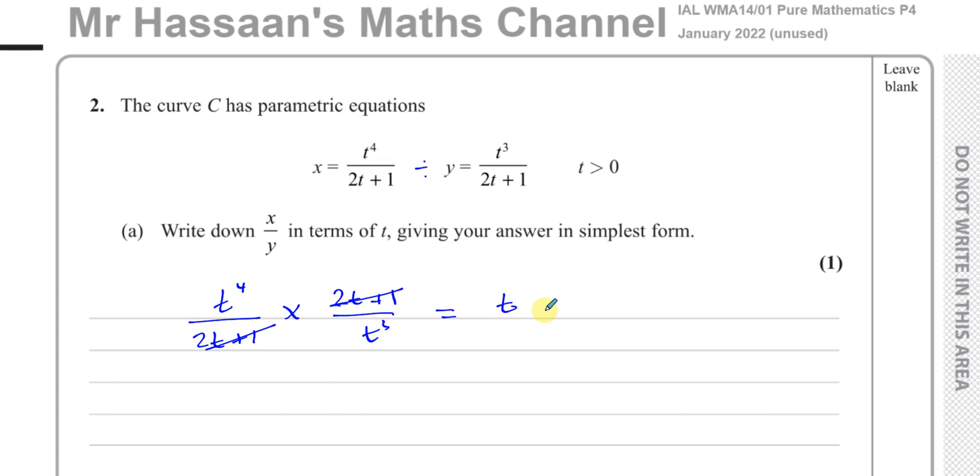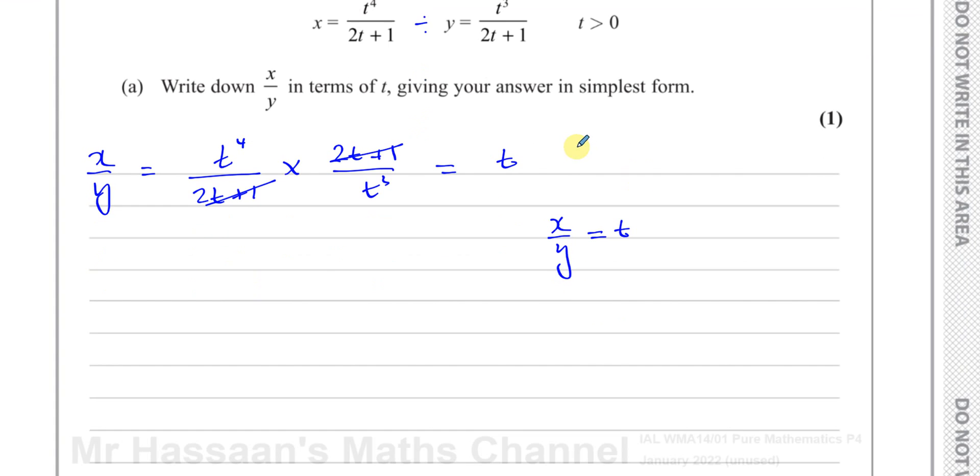So we can say that this is x over y. What we've just done is we've just divided x by y, we ended up with t. So we can say x over y is equal to t. Write down x over y in terms of t, so there's the answer to part a, very simple.